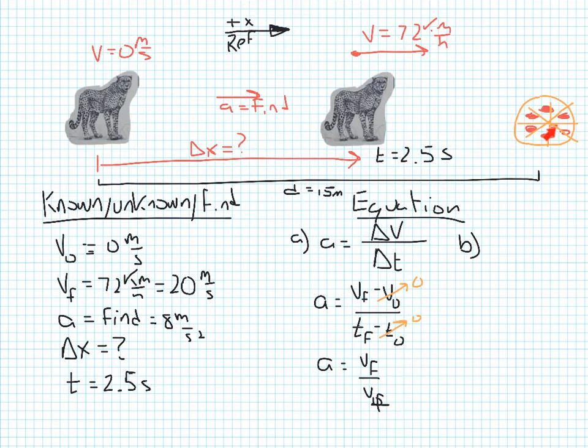And we're also making the assumption that this pizza, this prey, is stationary. We were told that that is 15 meters away.